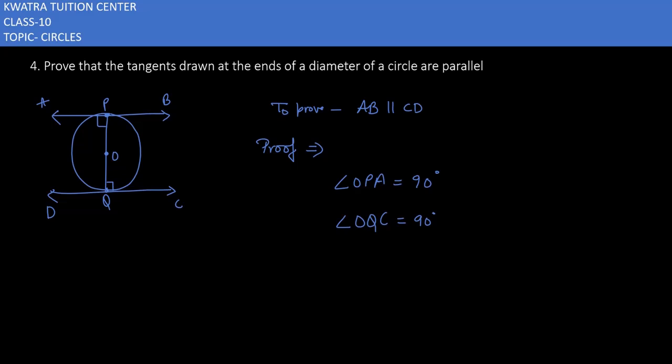These two angles, OPA and OQC, are equal. They are both 90 degrees. Let's say this is equation number one, this is equation number two. So OPA will be equal to OQC, both 90 degrees.